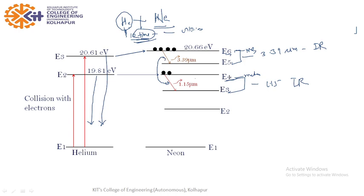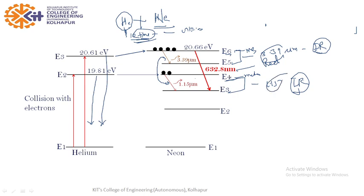One more stimulated emission transition is from E6 to E3, giving 632.8 nanometers — this is our required emission, which is in the red visible region. We need to eliminate the IR radiations at 3.39 and 1.15 micrometers. The discharge tube is made of quartz, which absorbs IR light, so those IR wavelengths are eliminated by absorption.